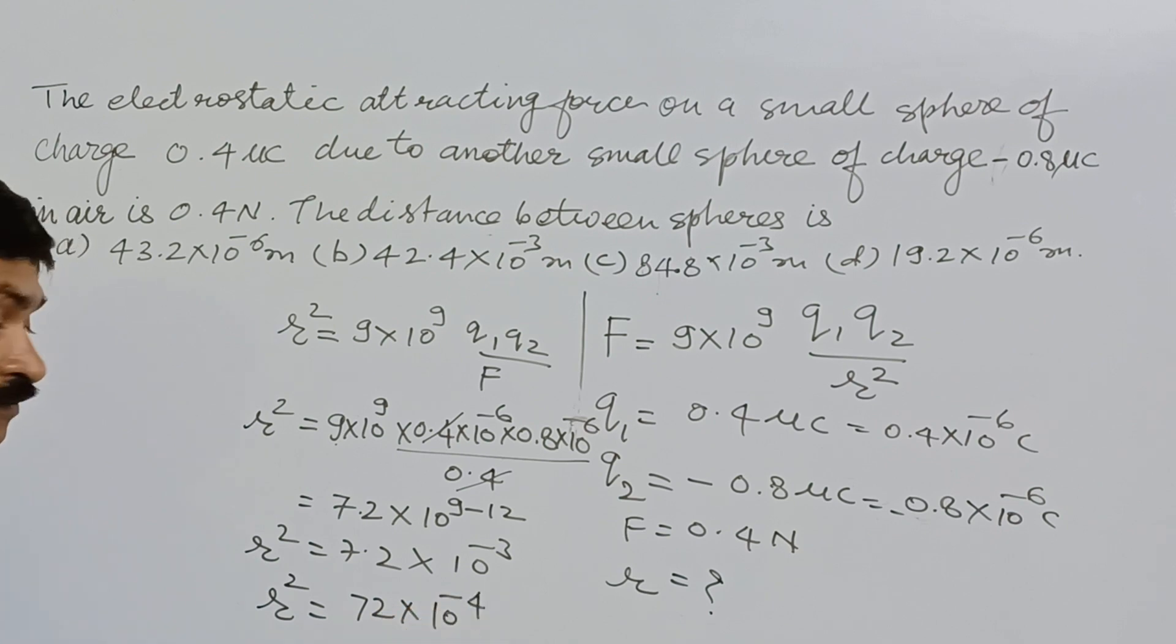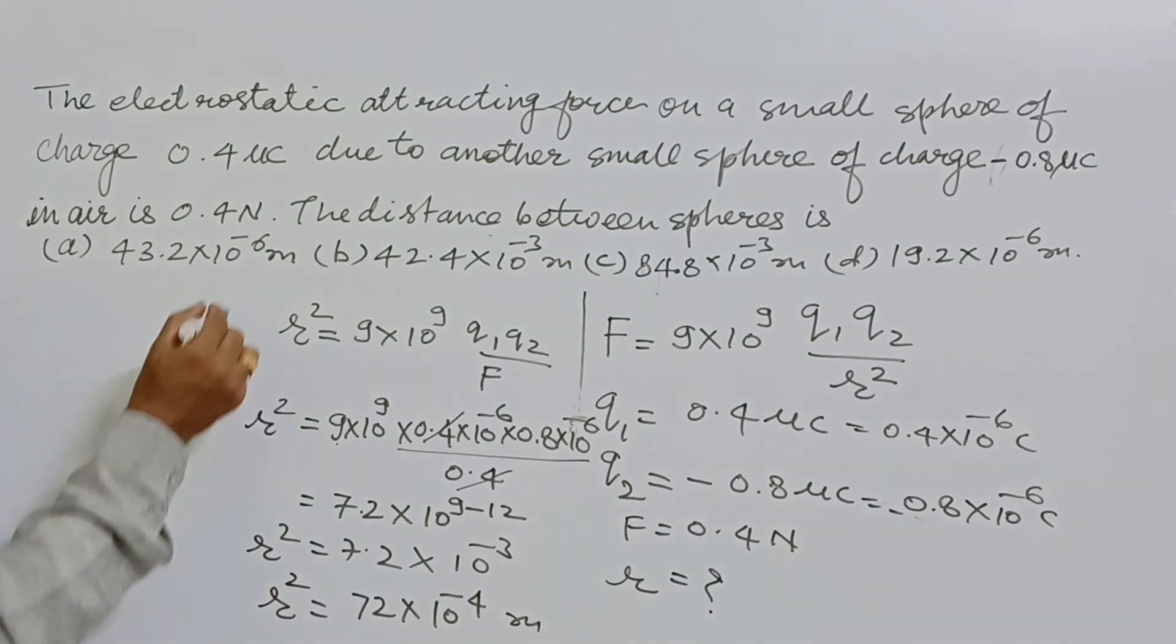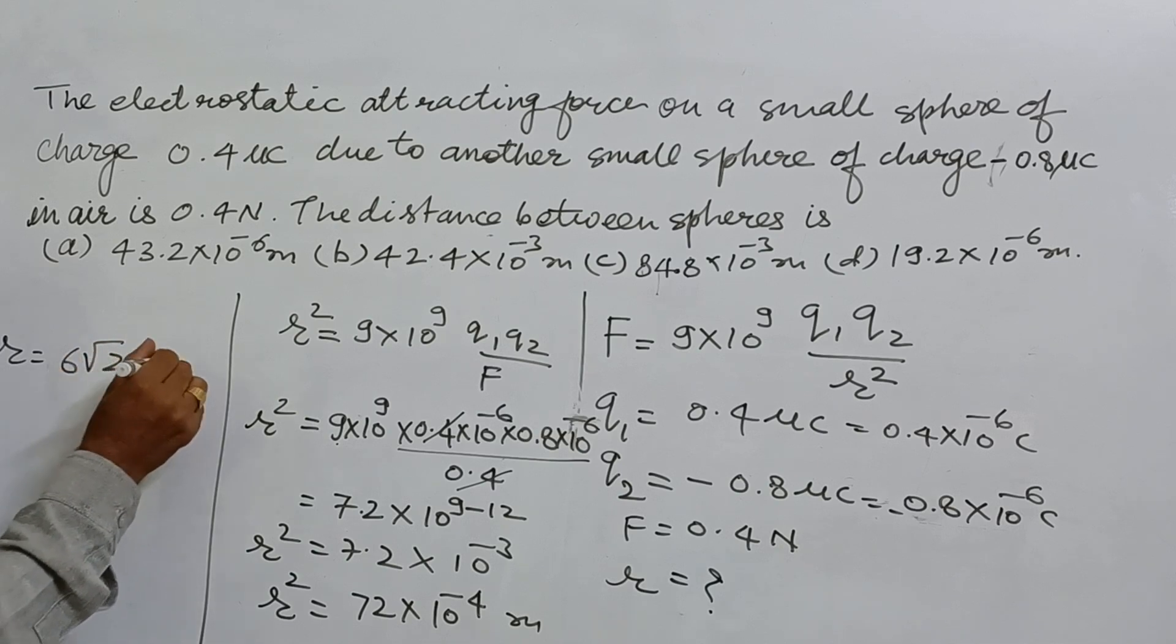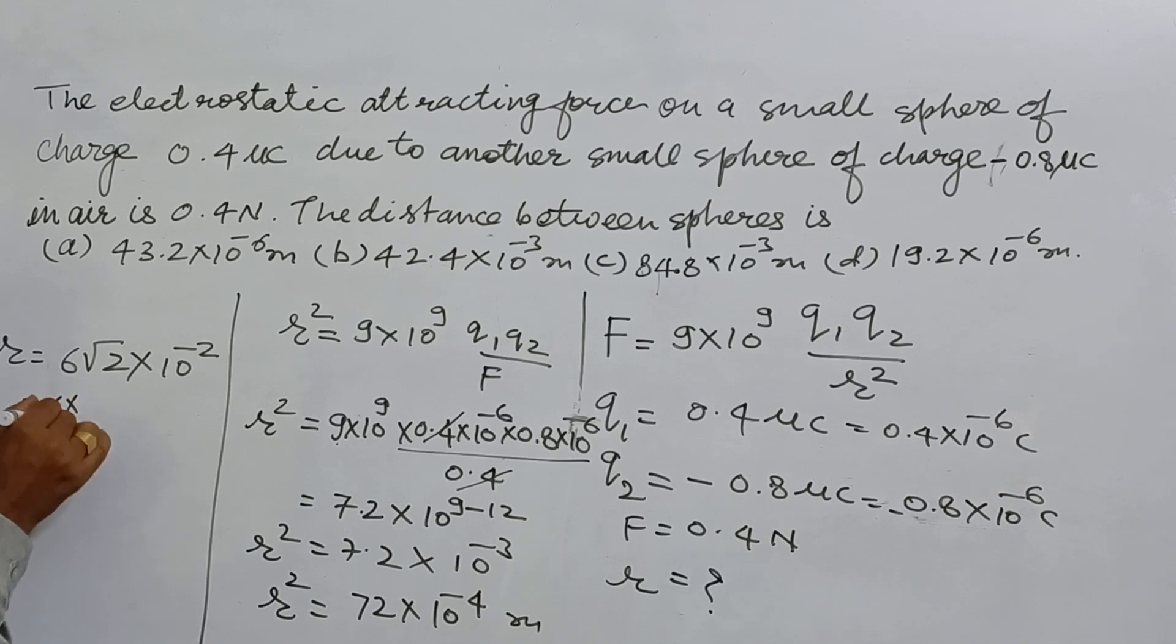For the final answer, 36×2 = 72, so it is 6√2×10⁻². And calculating: 6×1.414×10⁻², where √2 = 1.414...